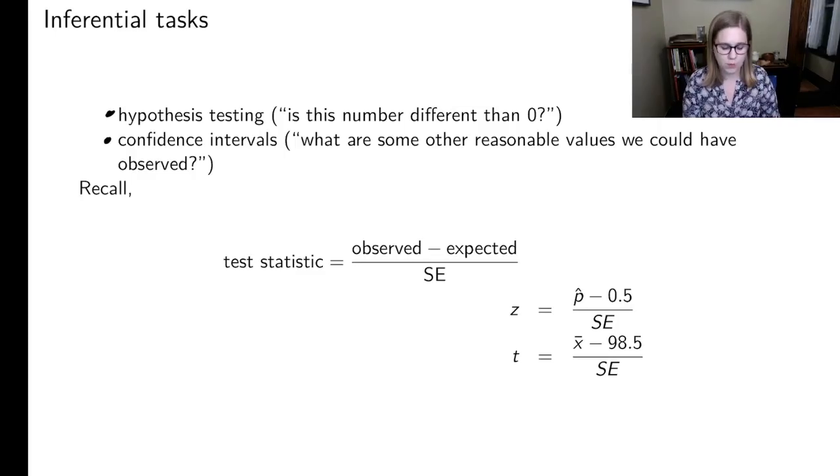For hypothesis testing, you might remember that what we do is we find a test statistic, which is our observed value minus our expected value over a standard error. So for example, if we were doing inference for a proportion, we would have our observed p hat, maybe we want to know if that proportion is different than 0.5, and we'd divide by the standard error. Or maybe we have a mean, an x bar, we want to know if people's average temperature is different than 98.5, and we'd divide by the standard error.